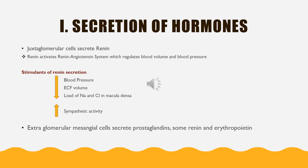Some of the conditions where renin secretion is high are: cardiac failure, standing, liver cirrhosis, psychological depression, dehydration, hypertension, hyponatremia, hyperkalemia, etc.